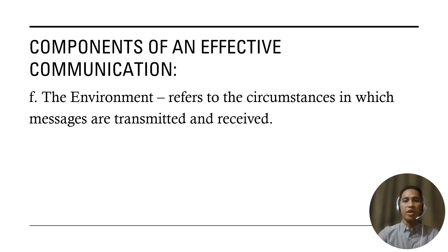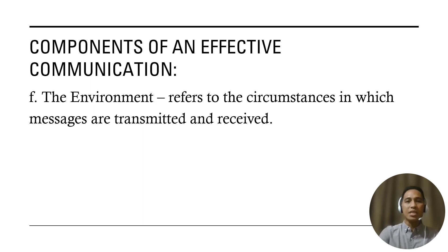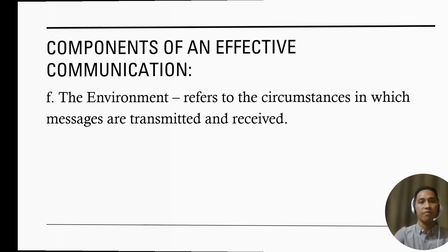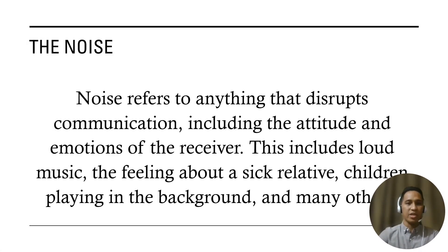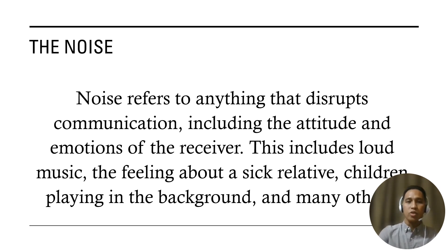Lastly, the environment refers to the circumstances in which messages are transmitted and received. Sometimes communication becomes very hard to understand — there is a distraction in the communication. One reason for being distracted is because of noise. Noise refers to anything that disrupts communication including the attitude and the emotions of the receiver. If the receiver doesn't want to listen or doesn't have the interest to listen, communication fails. It also includes loud music, feeling about sick relatives, children playing in the background, and many others — examples that may disrupt communication and lead to misunderstanding.